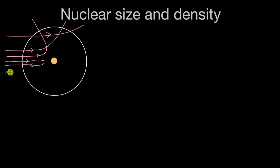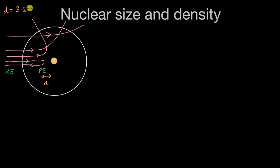At this point the alpha particle came momentarily to rest, so all of its kinetic energy was changed to potential energy of the system of the nucleus and the alpha particle. Using conservation of energy and doing some calculations, we were able to figure out this distance, called the distance of closest approach — how close an alpha particle of some known kinetic energy can get to the nucleus. This came out to be approximately 3.2 × 10⁻¹⁴ meters.